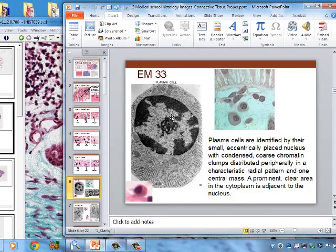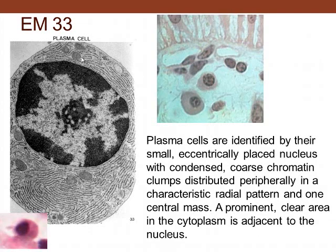In slide EM33 we see a plasma cell. Note the cartwheel-shaped nucleus with heterochromatin and euchromatin arranged like cartwheel spokes. The cell is centrally located among fibroblasts and has an abundance of cytoplasm containing rough endoplasmic reticulum.